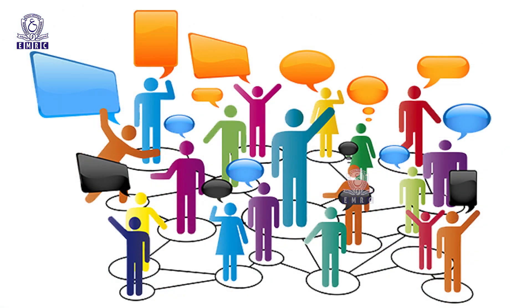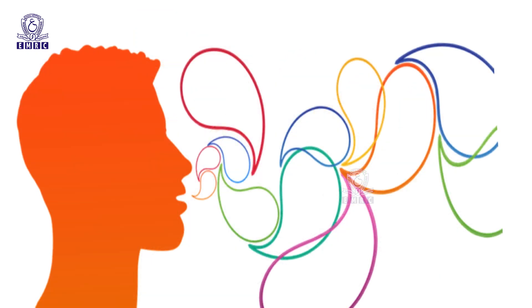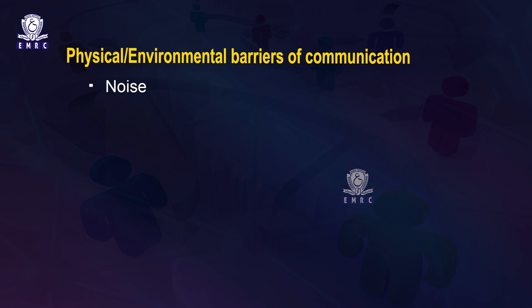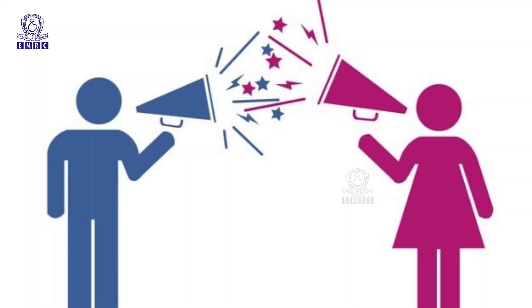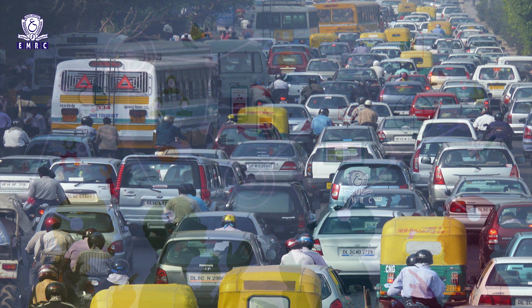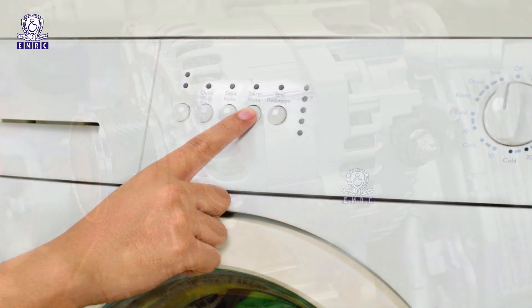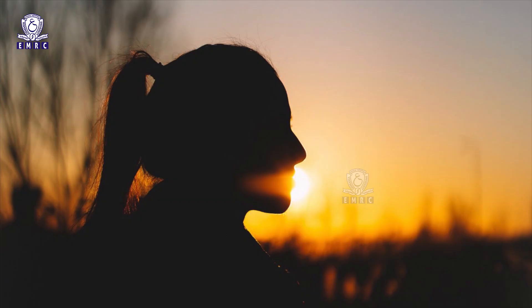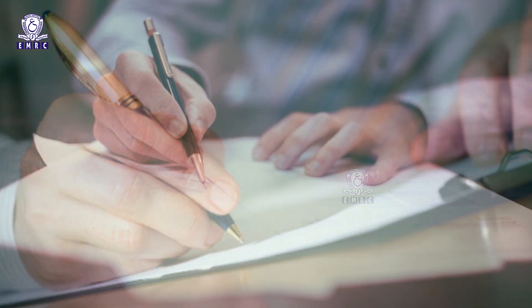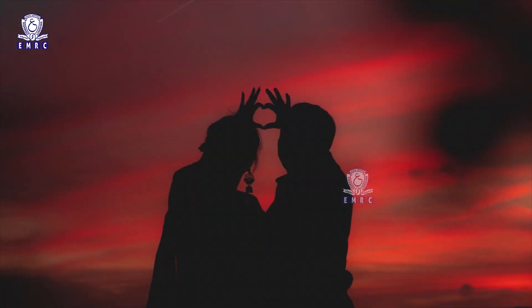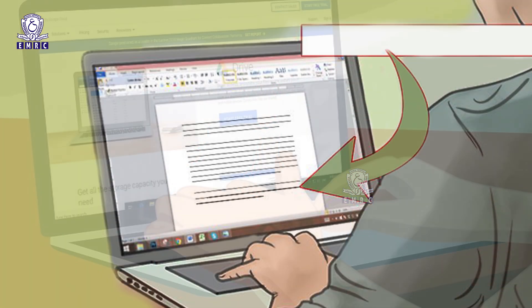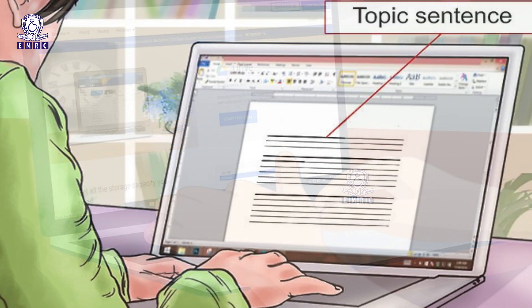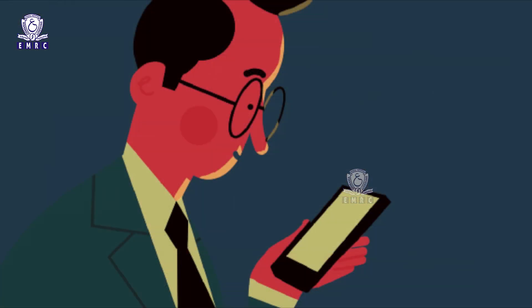Some commonly observed physical or environmental barriers include noise, which can occur from the environment due to factors such as traffic sound, conversation between other people, and noise from machines and appliances — all affecting the quality of communication. Lighting and temperature conditions in the environment can also affect the process of communication. Lighting has a significant impact on written communication and in processing nonverbal communication. For example, a bank clerk might get distracted due to inappropriate lighting and send incorrect information in a mail to his manager.